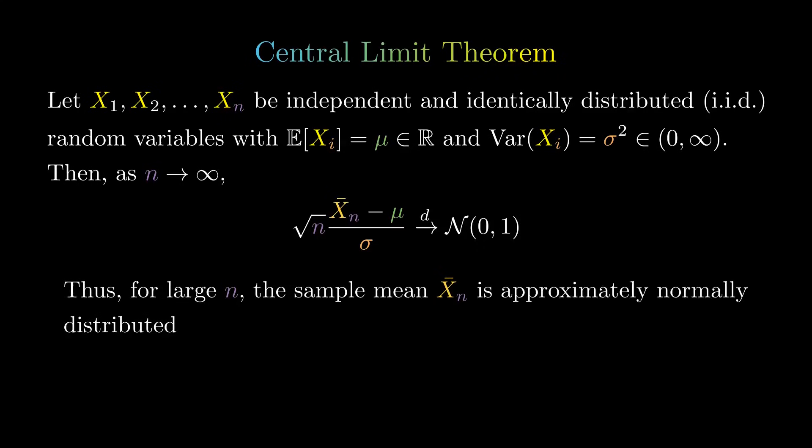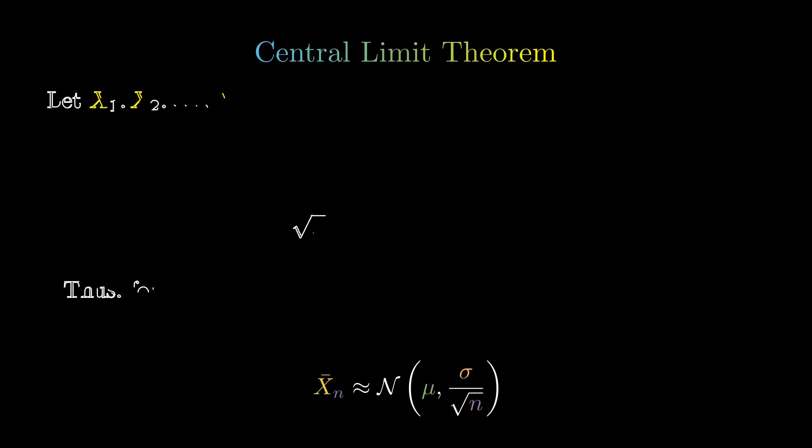We can see that, for large n, the sample mean is approximately normally distributed. This is because the standardized sample mean is approximately a standard normal, which implies that the sample mean has an approximate distribution given by a normal with mean mu and standard deviation sigma over the square root of n.